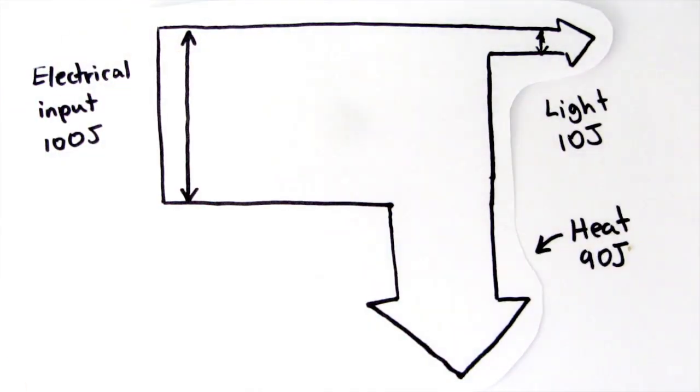This Sankey diagram for an electric lamp shows that most of the electrical energy is transferred as heat rather than light. This means it's very inefficient.